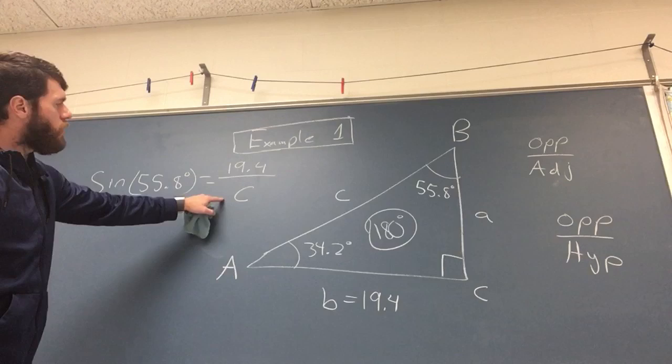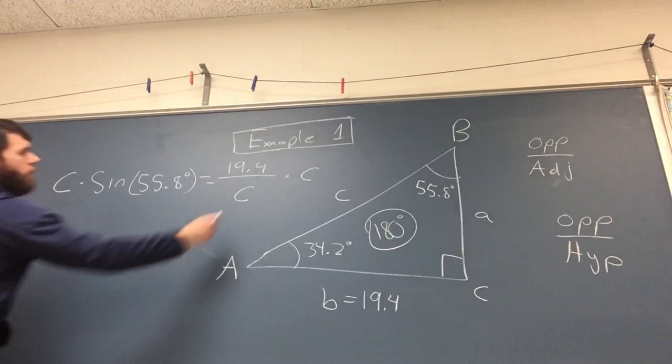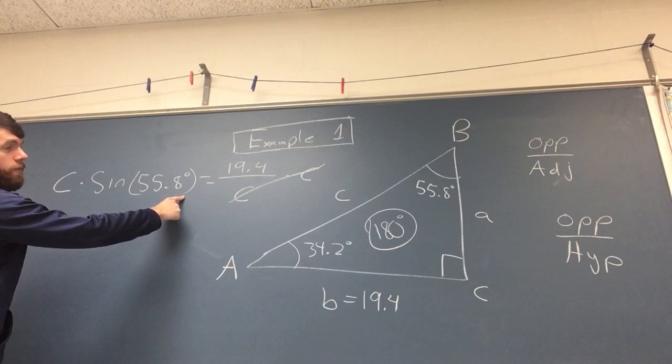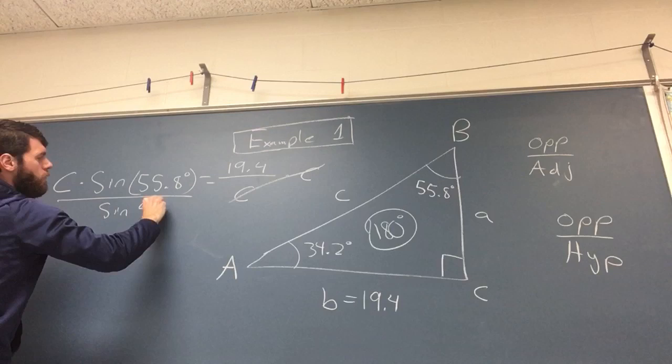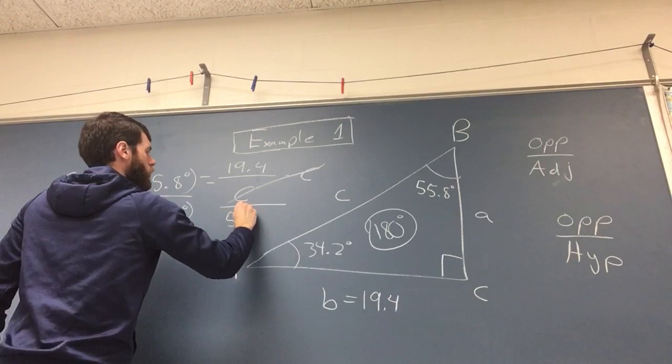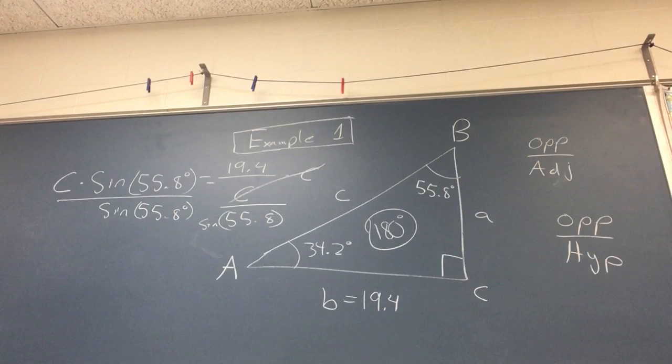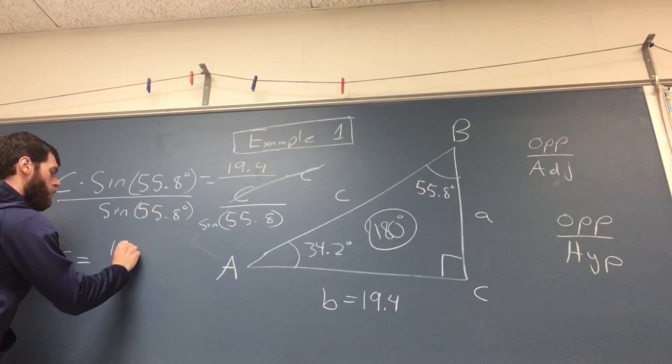To solve for C, you have to multiply both sides by C and then divide both sides by whatever the sine of 55.8 is. And yeah, in the end you'll have this: C is equal to 19.4 over the sine of 55.8.